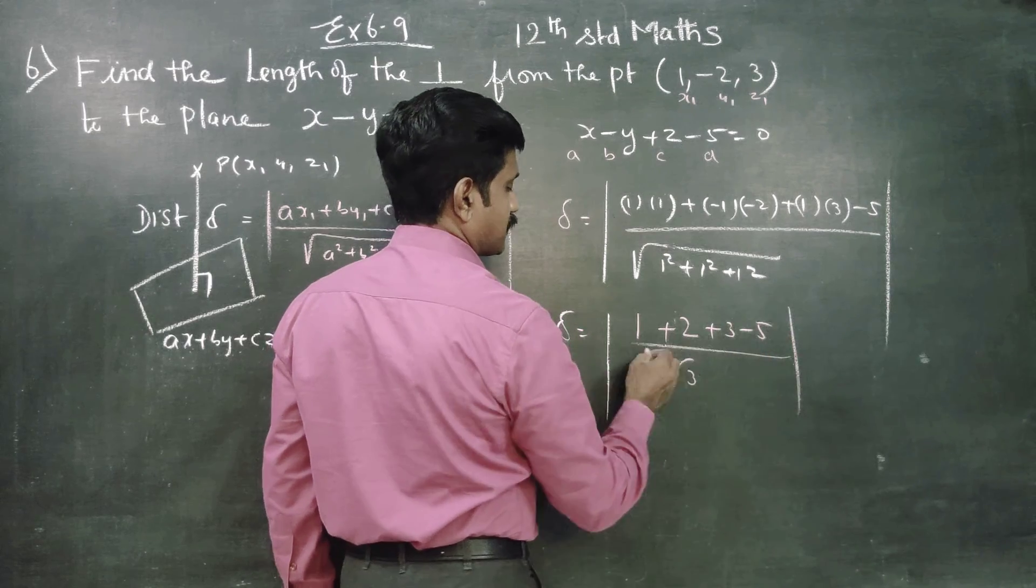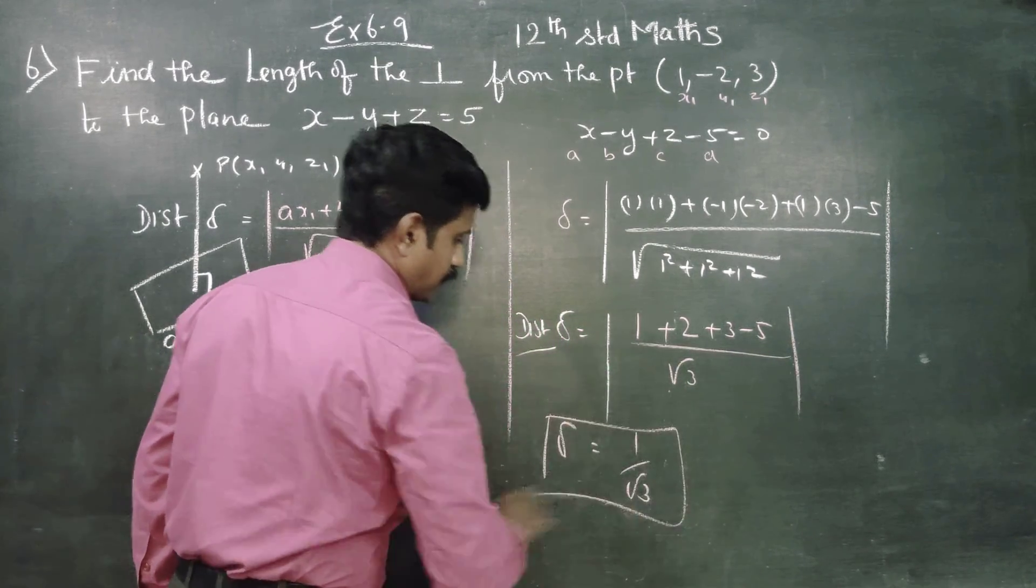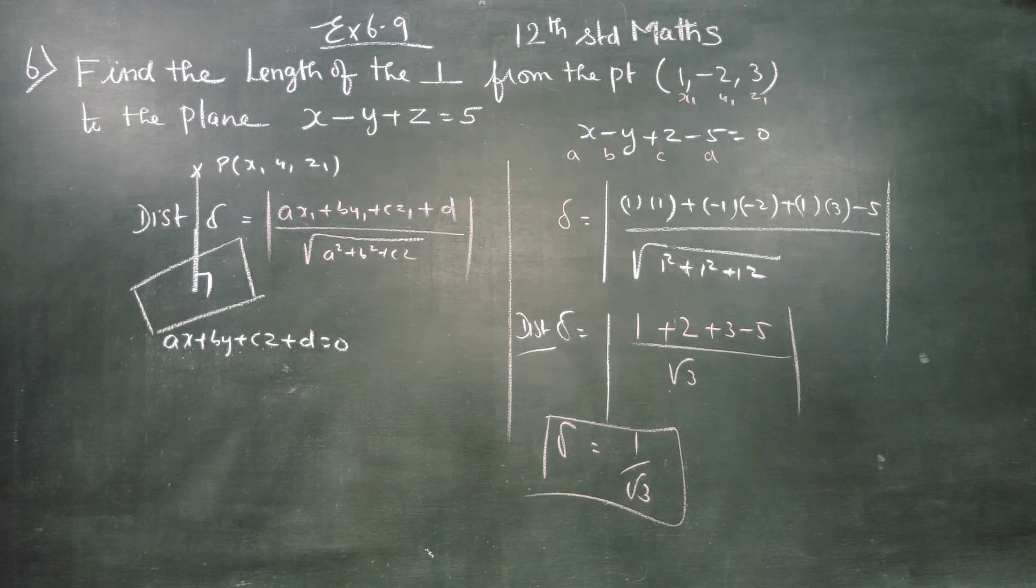Above is 5 - 5 = 0. The answer is 1/√3, positive answer. This is the distance between the point and the plane. Thank you.